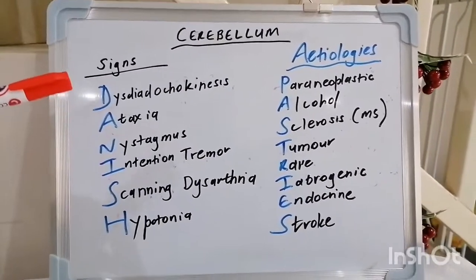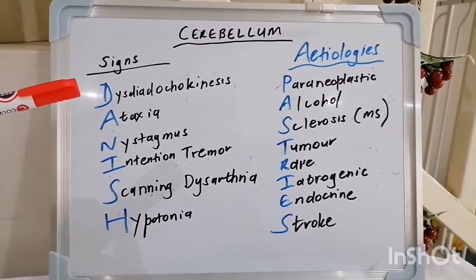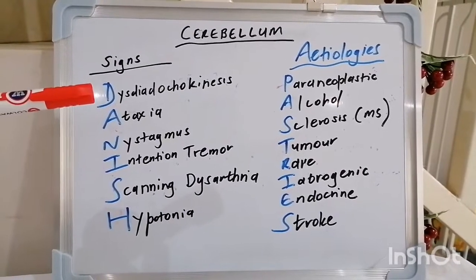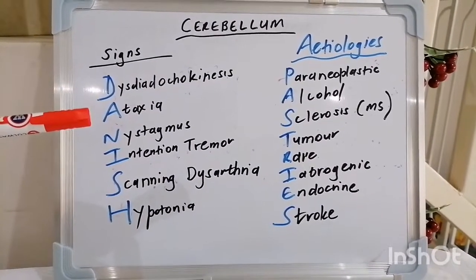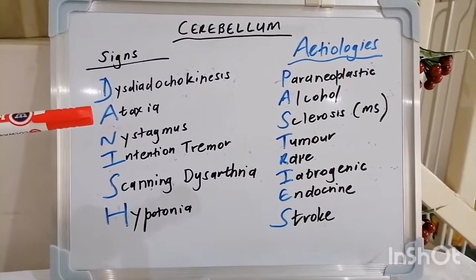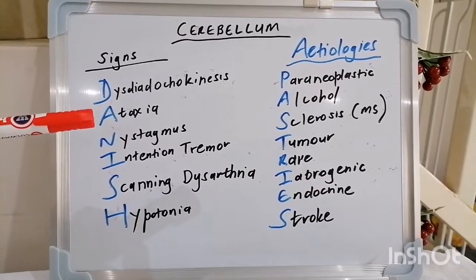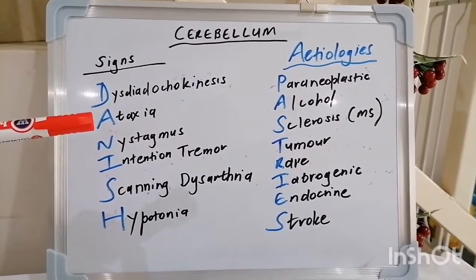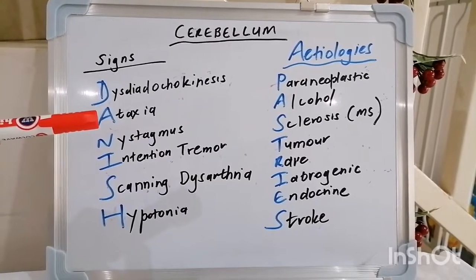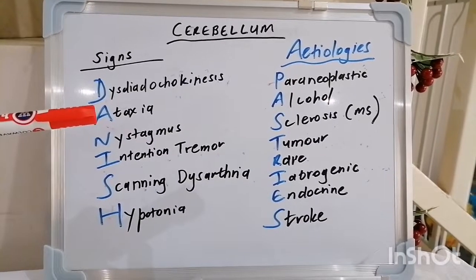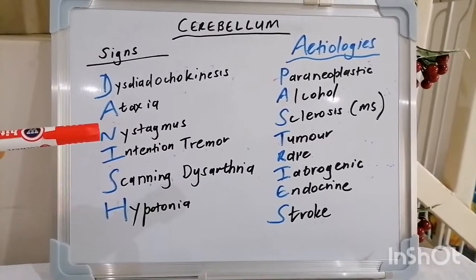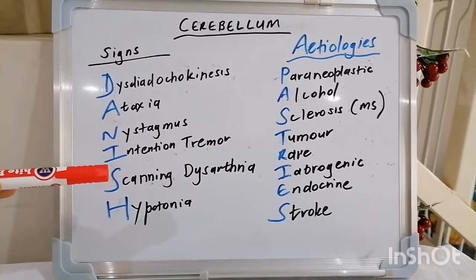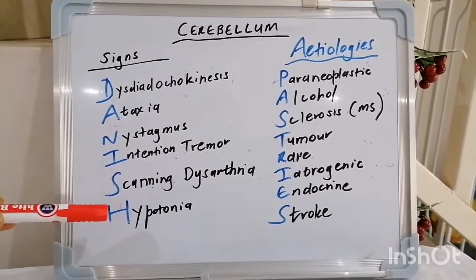When you speak to cerebellar disease, the signs mnemonic is DANISH. D stands for dysdiadochokinesis or dysmetria. A speaks to ataxia — it's good to differentiate cerebellar ataxia from vestibular and sensory ataxia. Sensory ataxia involves the posterior columns. N stands for nystagmus, and I for intention tremor.